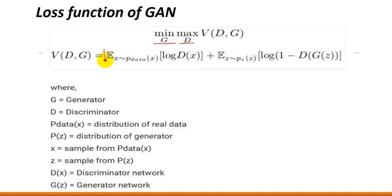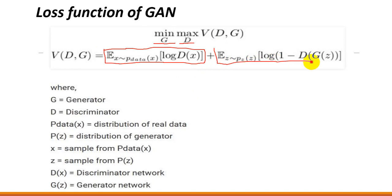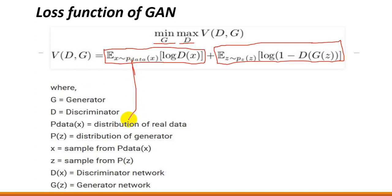The discriminator needs to maximize the entire process. The first part of the equation represents the expectation of the complete discriminator when we give it real images. The second part represents the expectation of D probability — the cup probability — when you give your discriminator fake images. G is the generator, D is the discriminator. This is P_data, which is the expectation value representing the distribution of the real data.